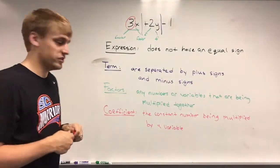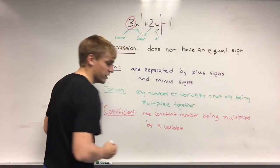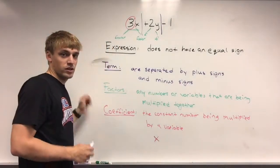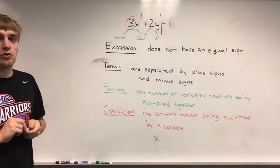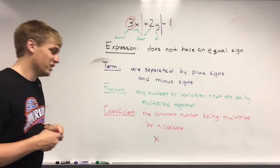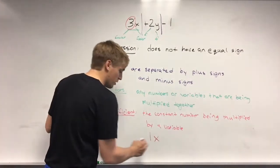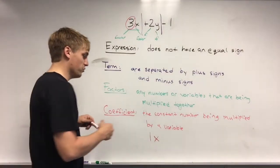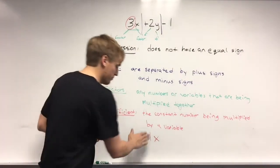One thing with coefficients is if we have a variable all by itself. For example, if we just have x all by itself. Well, x's coefficient would be 1. And that will be important later when we start combining terms. But if you see a variable all by itself.